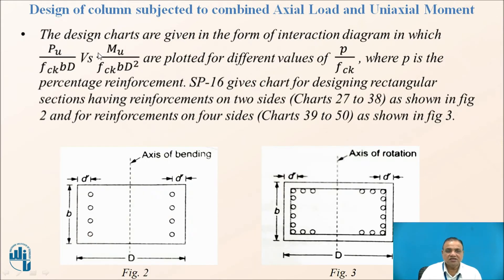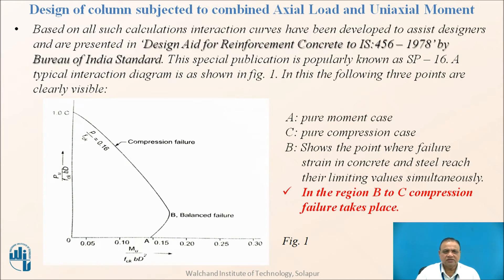Now, please remember this particular curve, it is not a single curve. You find for various percentage there are curves parallel to this above this as well as below this. You will get a number of curves for different values of P by FCKBD where P is percentage of steel divided by FCKBD. That means we are supposed to find out from this chart what will be the value of percentage steel.